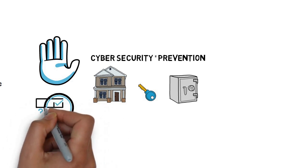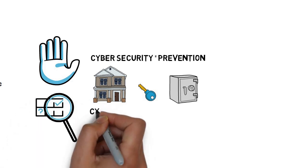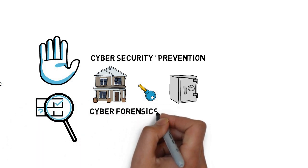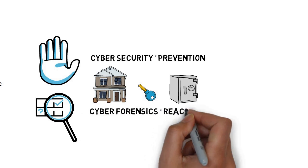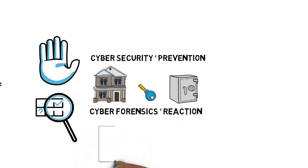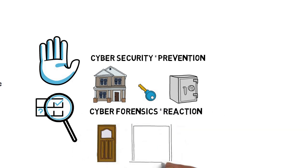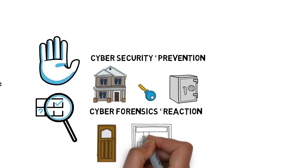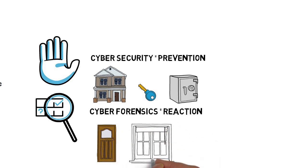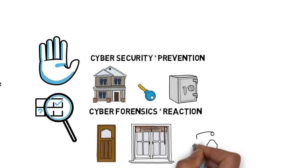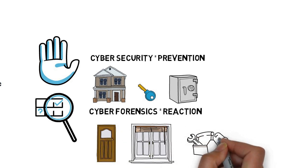Cyber security is also about reaction — that is, what to do when a failure in cyber security preventative measures occurs. So with our house example, a reaction would constitute what you would do after being burgled. Forensics would involve determining how the burglar managed to get in.